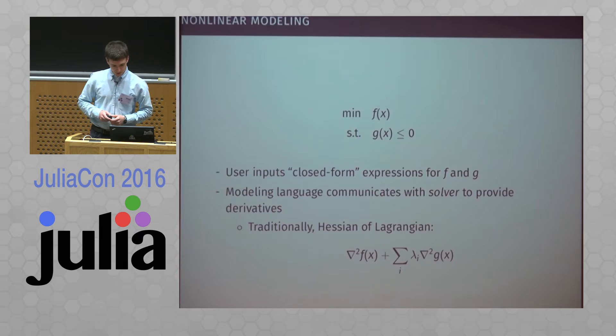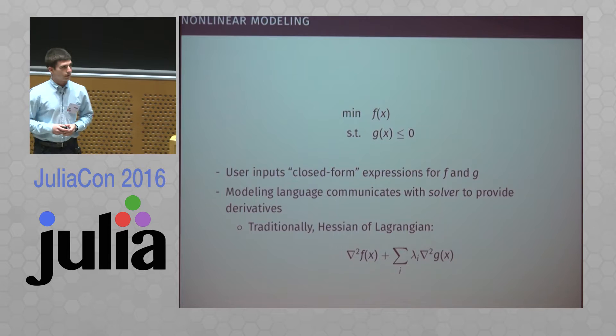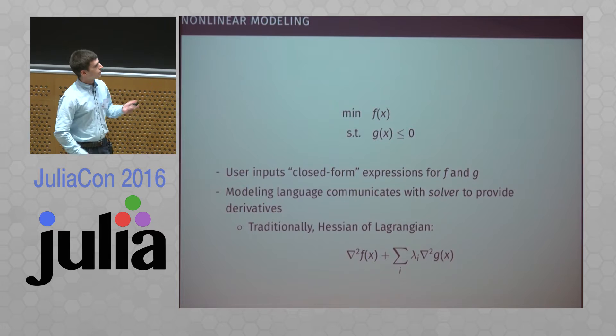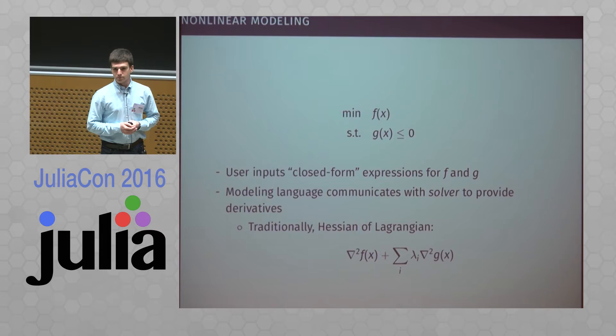The basic problem I'm going to think about is solving a nonlinear optimization problem where we are minimizing some objective function f of x, subject to some set of constraints. These could be a large set of constraints, and we're in the case where you write down a closed-form expression for these functions f and g. These are not black boxes — these are something you can write down in closed form, and we provide our own syntax for you to write them down.